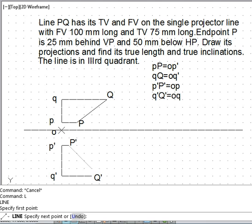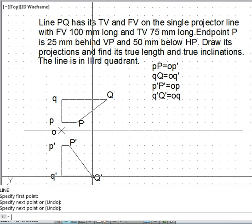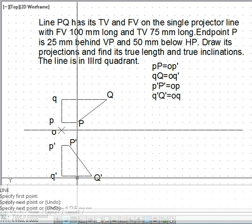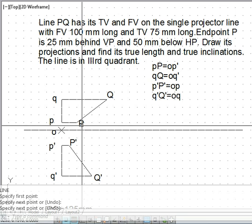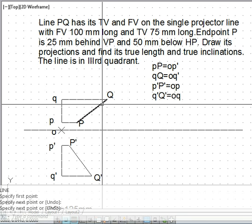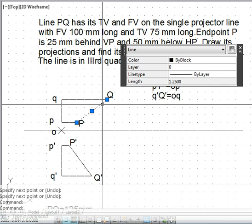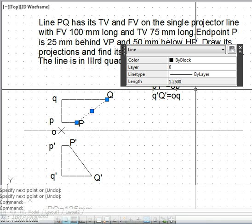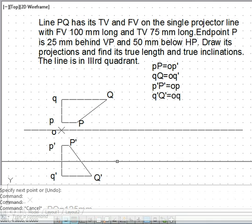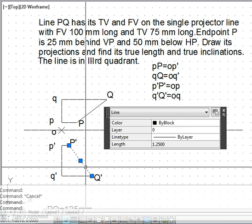We join them together so capital P dash capital Q dash and capital P capital Q. Both these lines are of equal length. You can see in the previous problem also this length was 125. Here also it is 125 mm. We can verify it here. This is also correct.